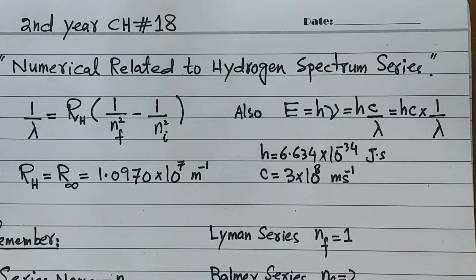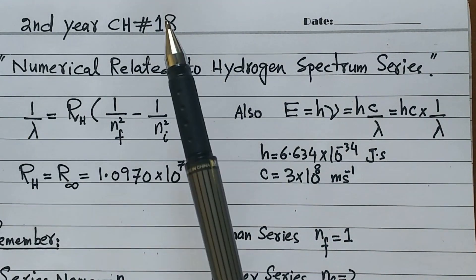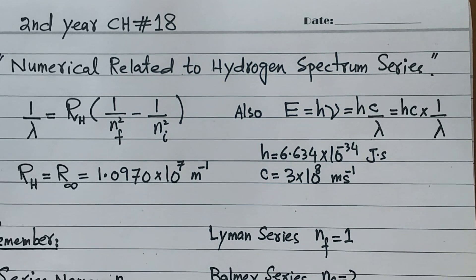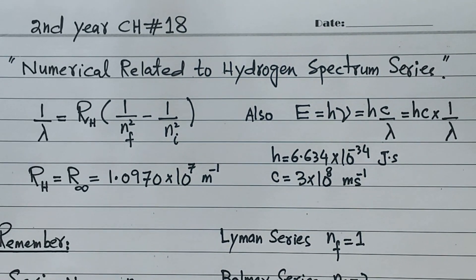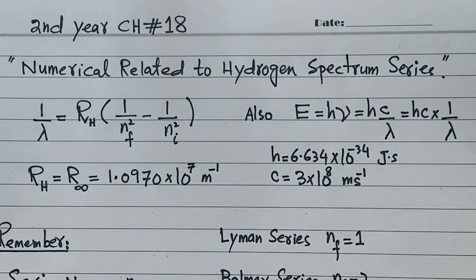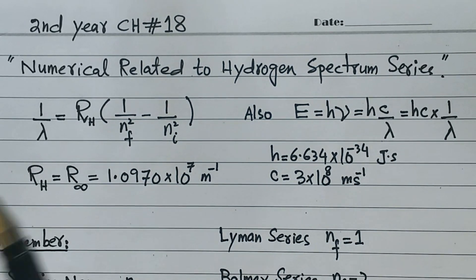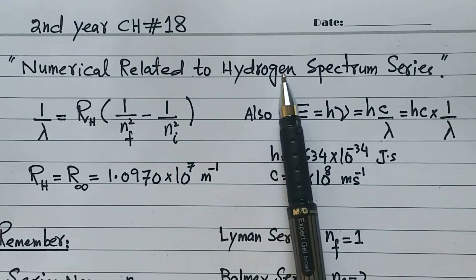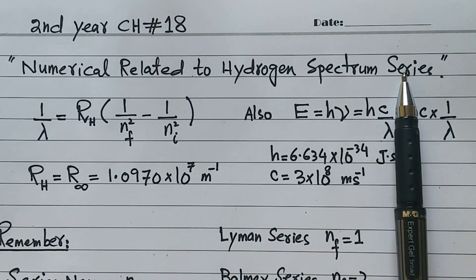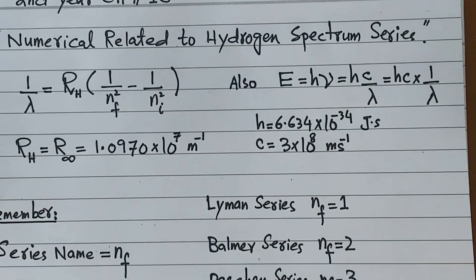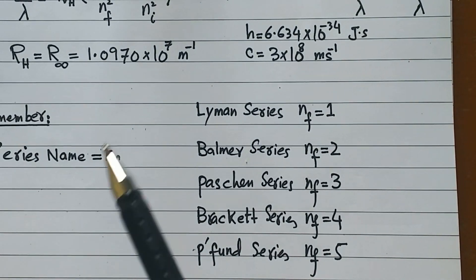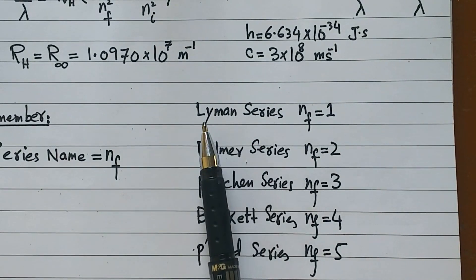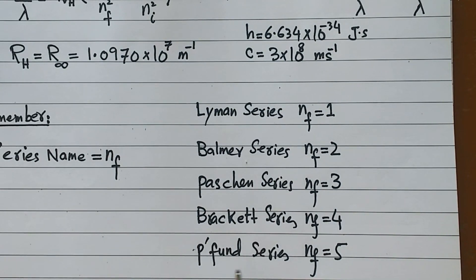Today we are talking about second year chapter number 18 numericals. In chapter 18, there are types of numericals which are often asked in exams and most repeated. These are numericals related to hydrogen spectrum series. I will show you these series: Lyman series, Balmer series, Paschen series, Brackett series, and Pfund series.